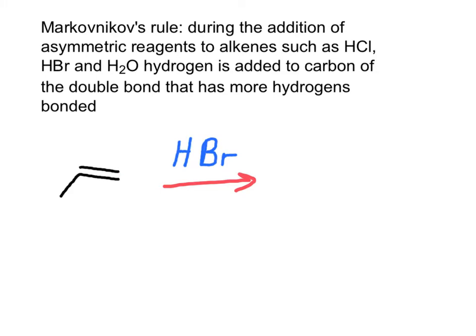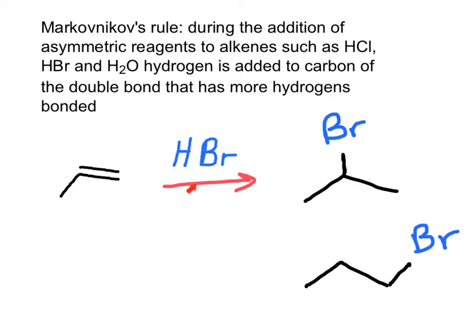The addition of an asymmetrical reagent to an asymmetrical carbon-carbon double bond is more complex. We will need to follow Markovnikov's rule, which states that when adding hydrogen bromide, hydrogen chloride, or water, the hydrogen will add to the carbon that has more hydrogens, and the electronegative atom will add to the carbon that is bonded to fewer hydrogens. In this case, the bromine can add to two different carbons, giving two different products.